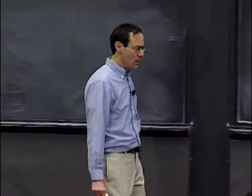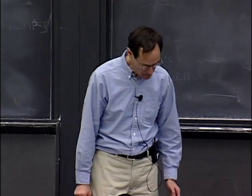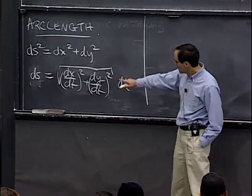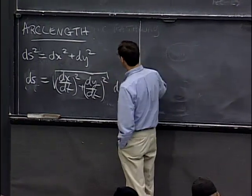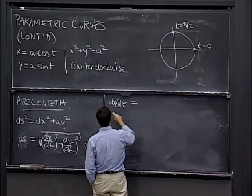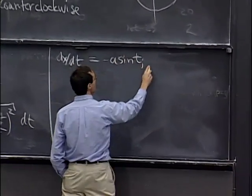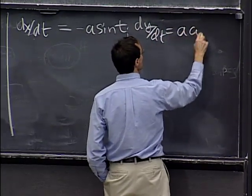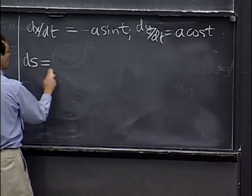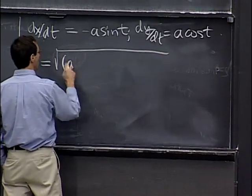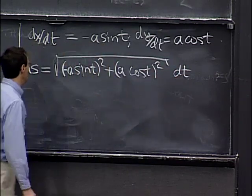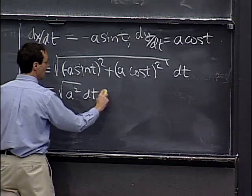That's the set of formulas for the differential of arc length. To figure it out, I differentiate x with respect to t. Since x equals a cos t, its derivative is minus a sin t. Similarly, dy/dt equals a cos t. Plugging in, the arc length element is the square root of (minus a sin t)² plus (a cos t)² dt, which simplifies to the square root of a² dt, or just a dt.